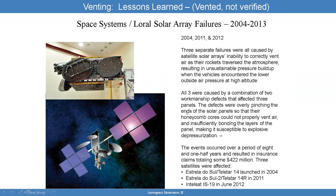The space system overall experienced several satellite failures in 2004, 2011, and 2012 — all covered in news articles. The solar arrays were unable to correctly vent the air, and as the rockets traversed the atmosphere, it again formed a pressure differential. All three of them failed and cost the program millions of dollars.